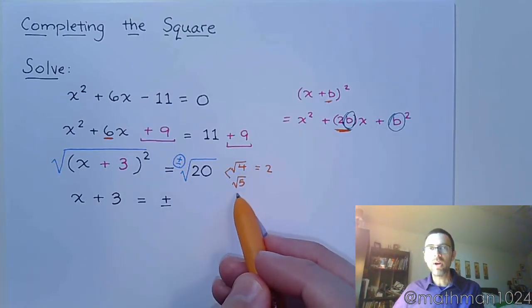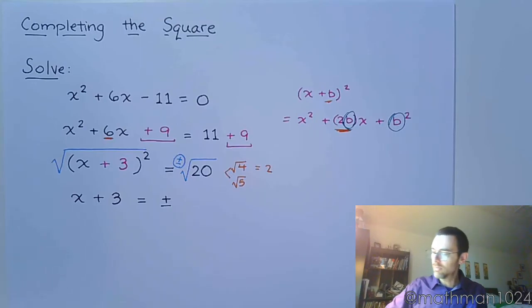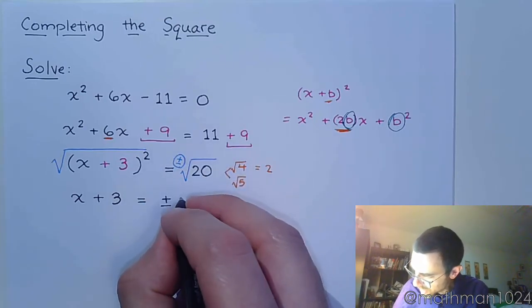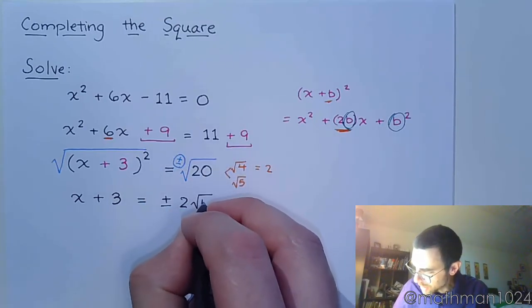All right, so we get ± 2 times the square root of 5.